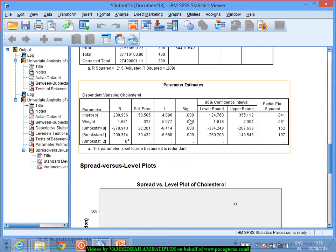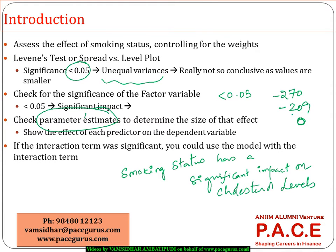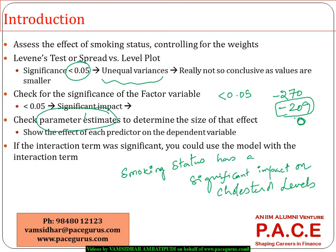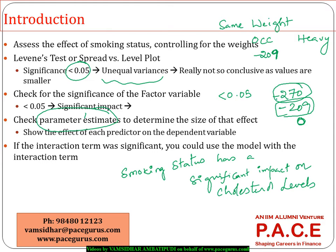Even after removing the impact of weight, smoking status has a significant impact. What this means is: if two people have the same weight, one being a heavy smoker and the other an occasional smoker, the occasional smoker would have, on average, cholesterol levels lower by 209 units compared to an equal-weight heavy smoker. Similarly, a non-smoker would have cholesterol lower by about 270 units compared to an equal-weight heavy smoker.